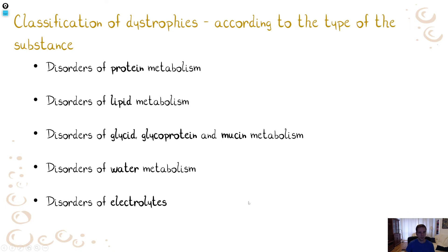How do we classify dystrophies? First, we can classify them according to the type of substance. We can have disorders of protein metabolism, lipid metabolism, disorders of sugars — which means glycates, glycoproteins, and mucin metabolism, since mucin is a glycoprotein — disorders of water metabolism such as cellular edema or dehydration, and disorders of electrolytes. We will discuss those subtypes in the next lecture.